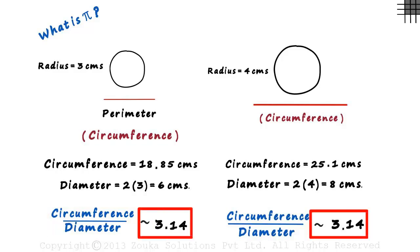This value is called Pi. Remember, both these values are approximations.